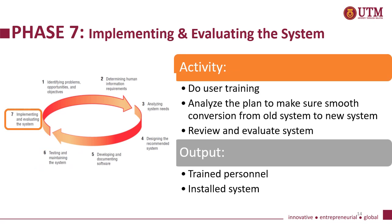Phase seven: implementing and evaluating the system. There are three main activities. One, do user training. Two, analyze the plan to make sure there is smooth conversion from the old system to the new one. Three, review and evaluate the system. The main output for phase seven should be trained personnel and the installed system itself.